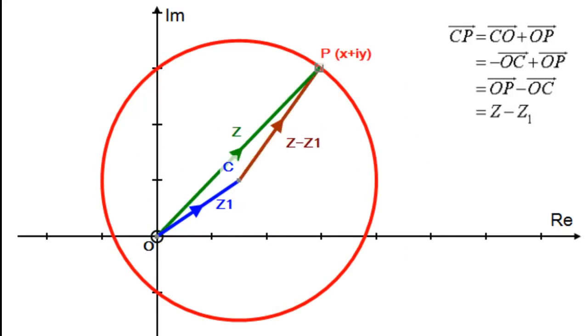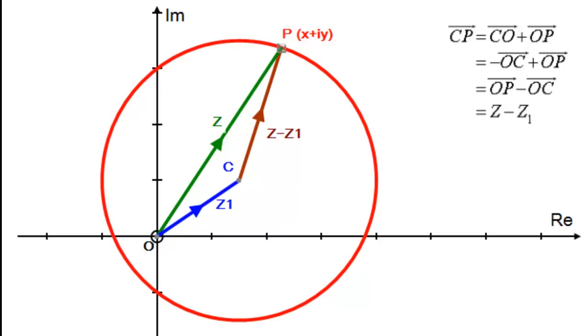Now if I pause the video you'll see that the centre of the circle is at this point C and is given by the complex number Z1. And any point on the circumference, this point P here, is given by this complex number Z.